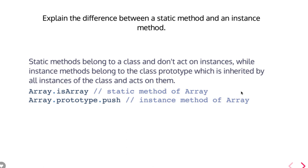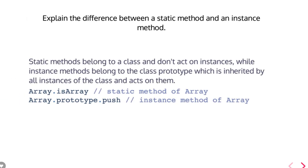Explain the difference between static and instance methods. Static methods belong to a class. In ES6 we can create a class and define static methods and normal methods. Normal methods are accessed from an object instance. Static methods can be called directly from the class name. For example, Array.isArray is a static method, while Array.prototype.push, pop, map, and filter are all instance methods. That's it — we will talk about more questions in coming videos.